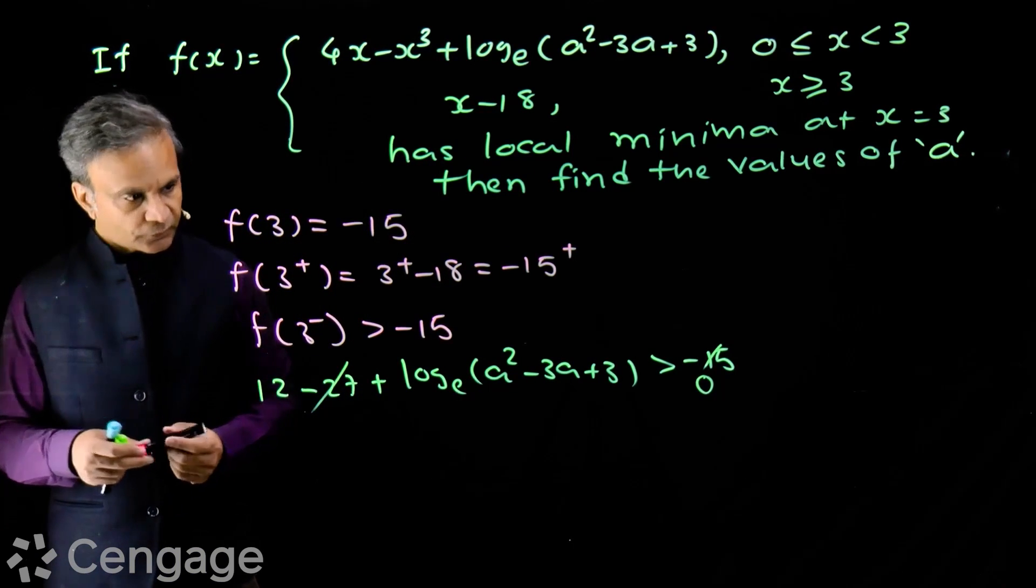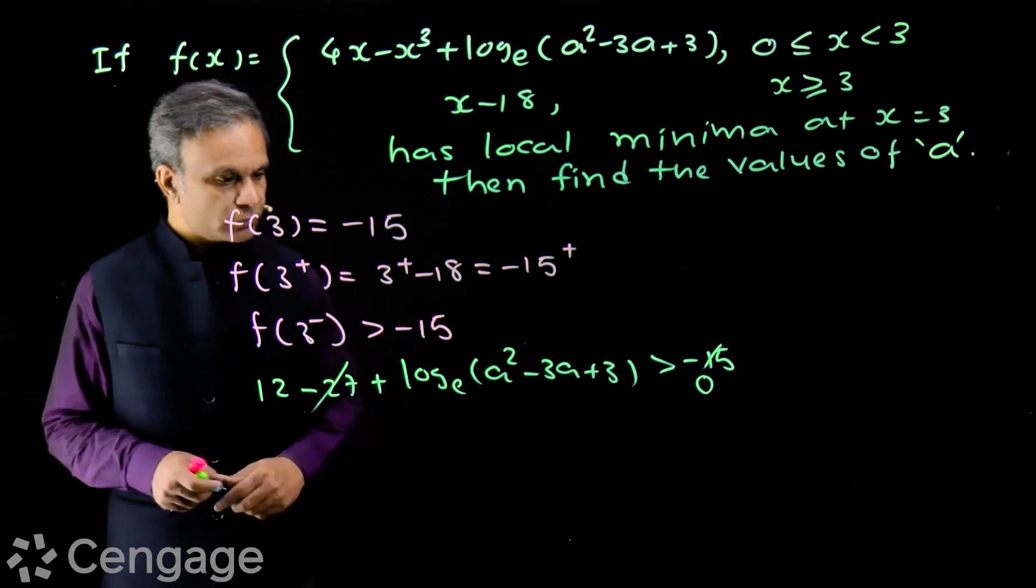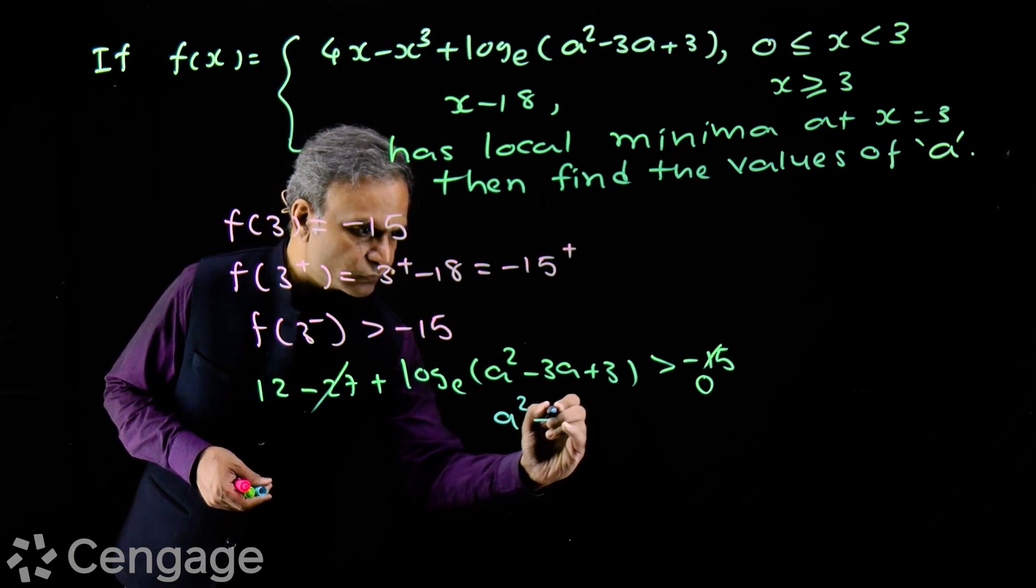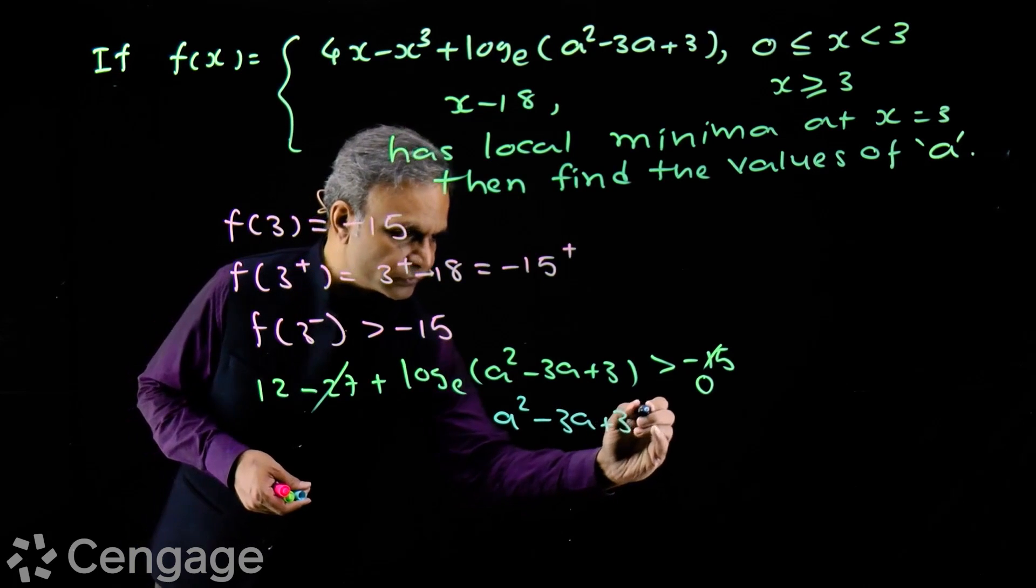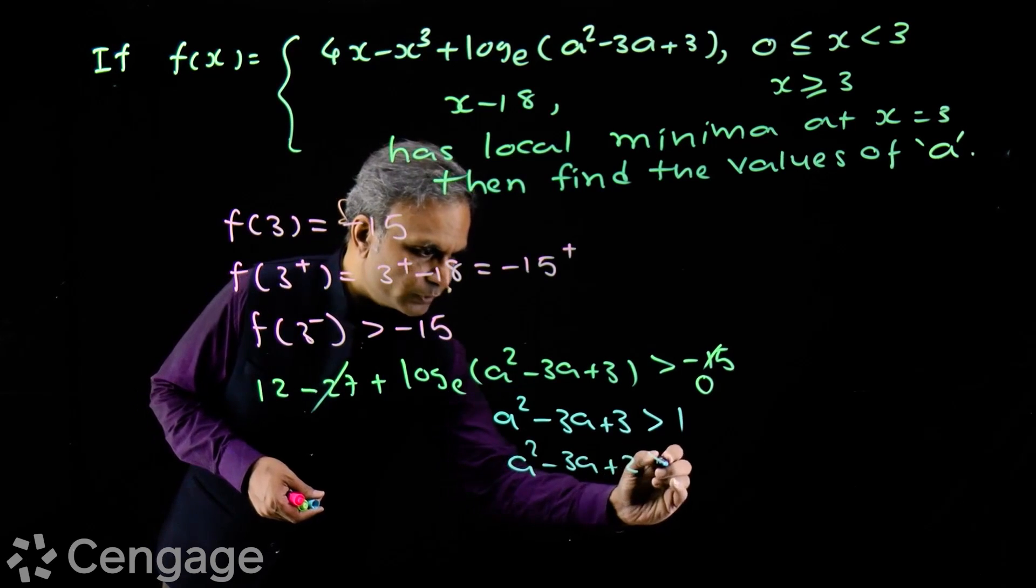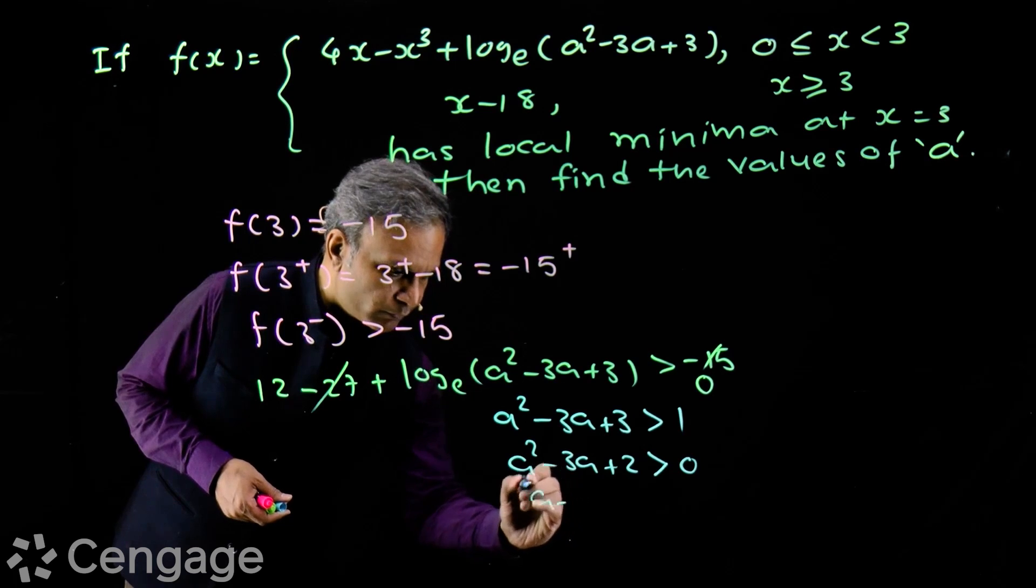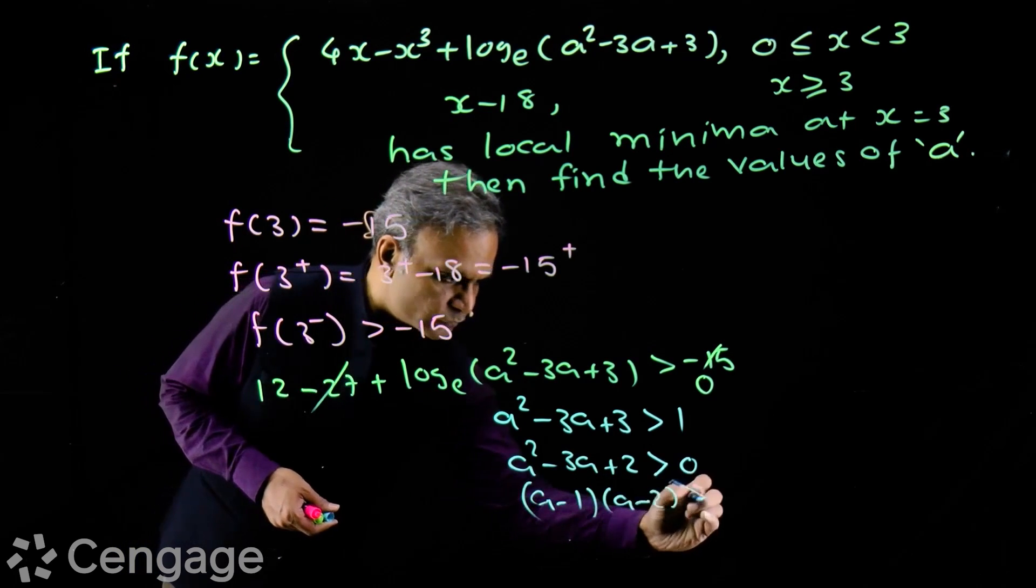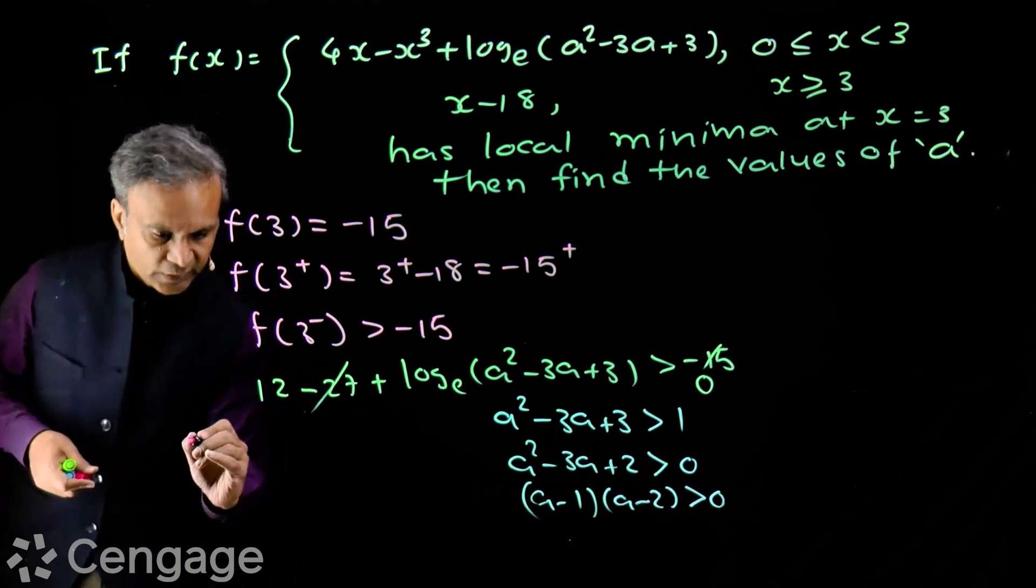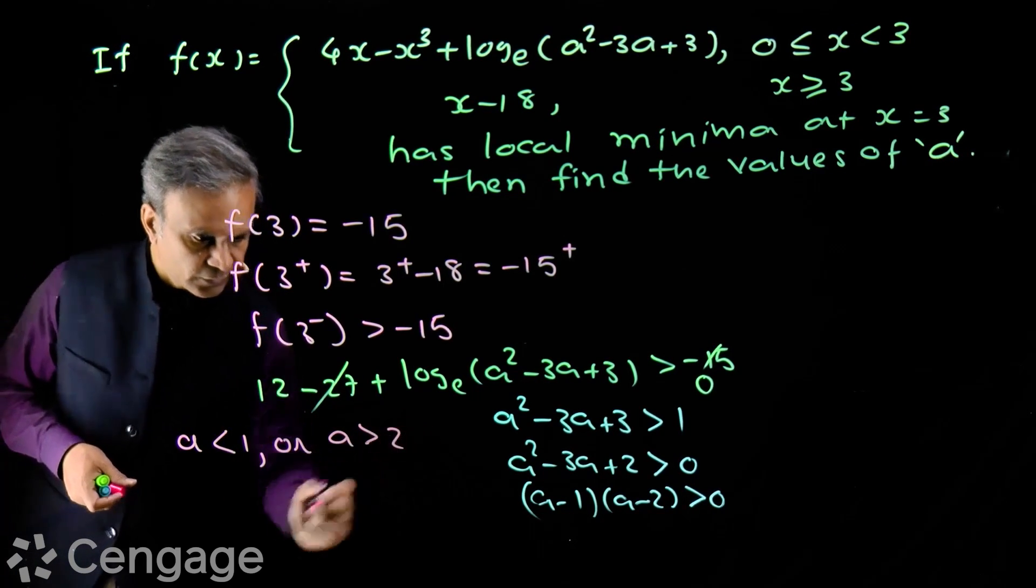We have logarithmic inequality. Log of this is more than 0. Base of log is more than 1, so this will be more than 1. So we have a square minus 3a plus 3 greater than 1. From this, we get a square minus 3a plus 2 greater than 0. From this, we get a minus 1 into a minus 2 greater than 0. So we get a less than 1 or a greater than 2.